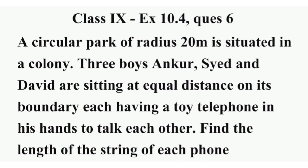Exercise 10.4. A circular park of radius 20 meters is situated in a colony. Three boys — Ankur, Sayyad, and David — are sitting at equal distances on its boundary, each having a toy telephone in his hand to talk to each other. Find the length of the string of each phone.